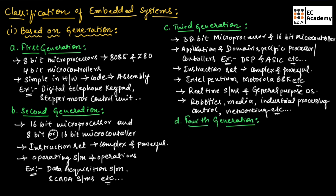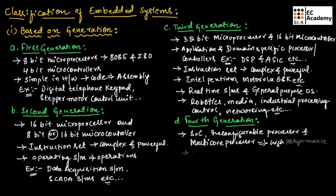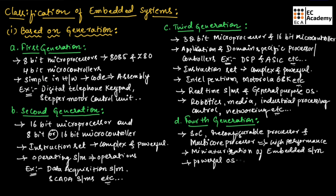Now let us understand the fourth generation. In this generation, System-on-Chip, reconfigurable processors, and multi-core processors were developed for high performance. Miniaturization of embedded systems was done, meaning small-sized embedded systems were developed. These embedded systems make use of powerful operating systems for their functioning. Examples of fourth generation are smartphone devices and mobile internet devices.